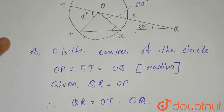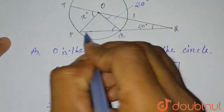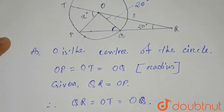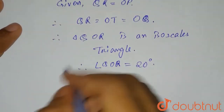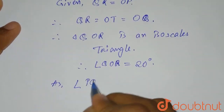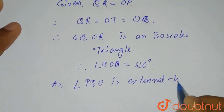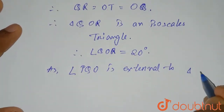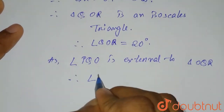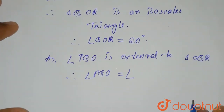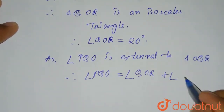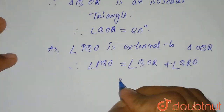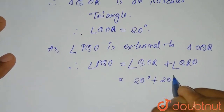Now we will apply the concept of the external angle. Angle PQO is external to triangle OQR. That means angle PQO equals angle QOR plus angle QRO, which equals 20 degrees plus 20 degrees, equals 40 degrees.